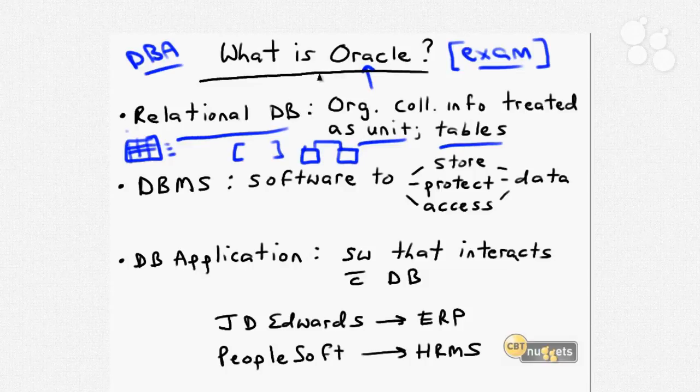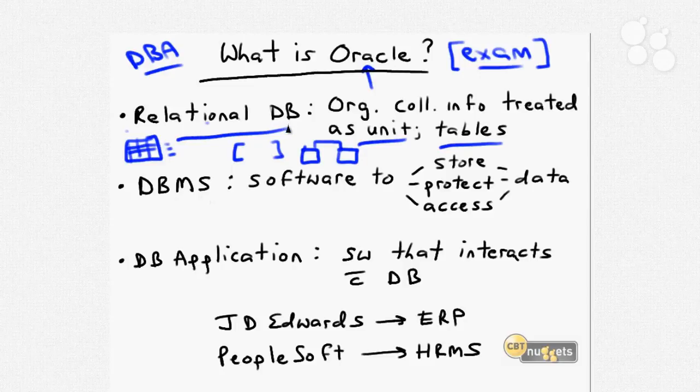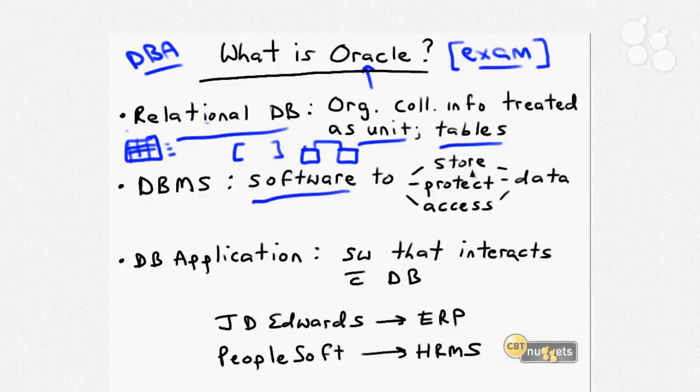Oracle is certainly a market leader. IBM's DB2 is another. Microsoft has SQL Server. Oracle purchased Sun Microsystems, which gives us MySQL as well. Now, the differentiation between a relational database and a database management system, or DBMS, is largely semantic. A DBMS, strictly speaking, refers to the software that's used to store, protect, and access your data.